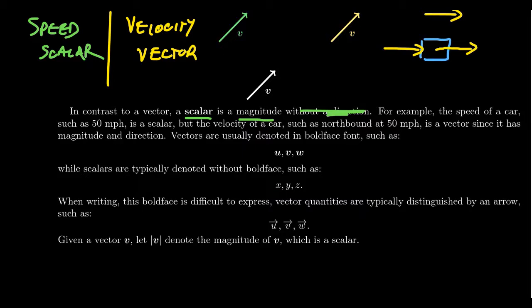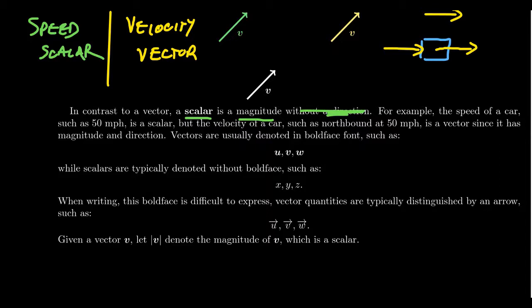When writing with a pencil or pen, it's very difficult to write in bold-faced font, so people write vectors with an arrow notation above them — like U-arrow, V-arrow, W-arrow. You'll see me writing little arrows above variable names to indicate vector quantities. Every vector also has a very important scalar attached to it — its magnitude. The magnitude of vector V is denoted using absolute value notation, |V|, representing the strength of the vector as a scalar quantity.